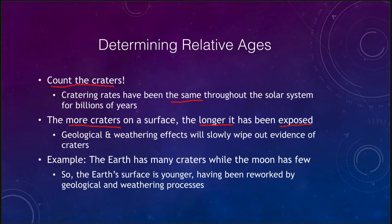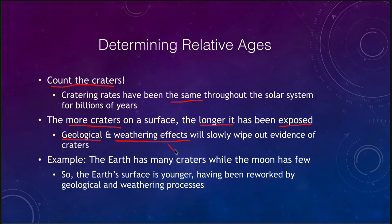Effects can wipe craters out. Geological effects, volcanic eruptions, and lava flows can wipe out craters, and weathering effects can slowly wear them down over time. Craters that formed a million years ago on Earth could be long since gone, and especially smaller craters would no longer exist. Craters that formed a billion years ago would no longer exist at all on Earth. However, on the moon we can see craters that formed a billion, two billion, or even three billion years ago — they are still present because there are far fewer weathering effects there.